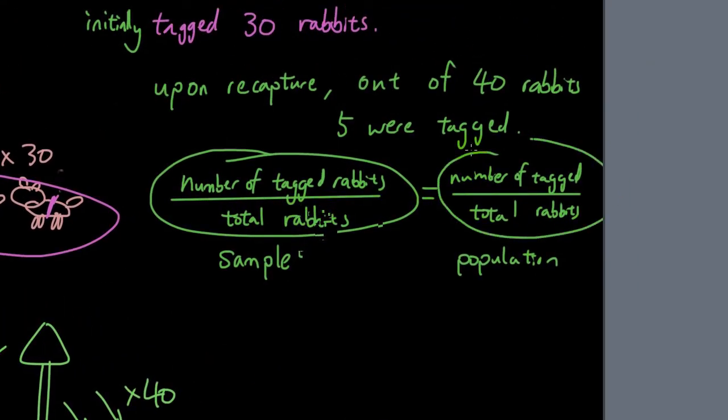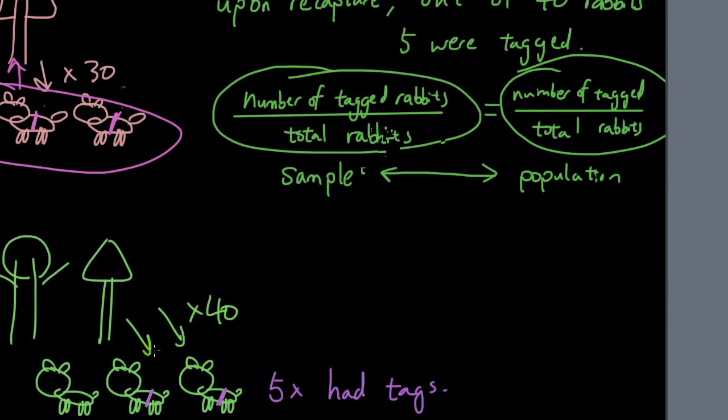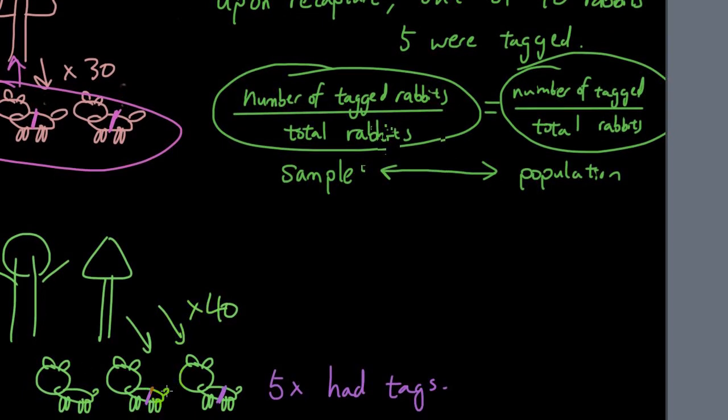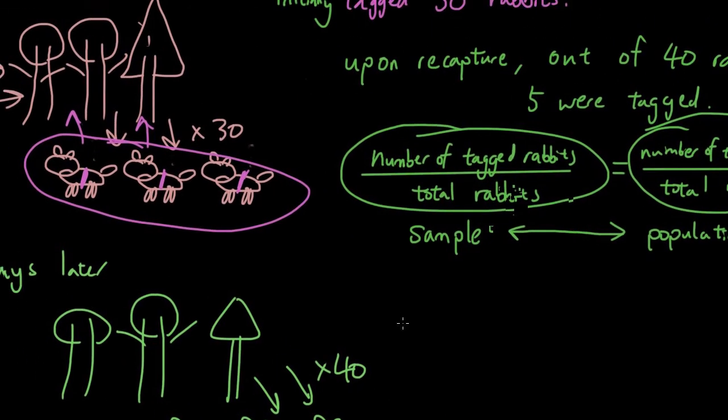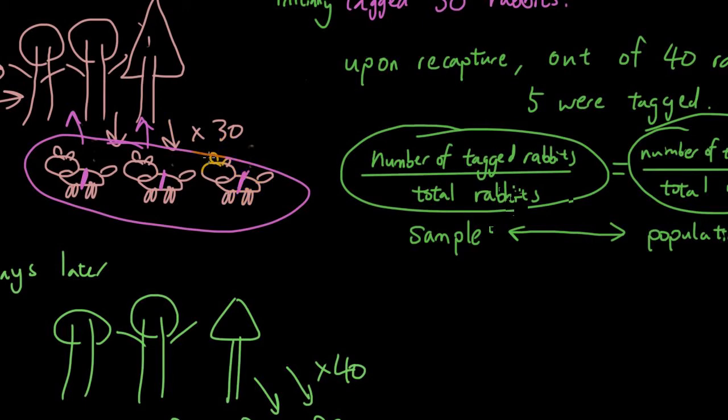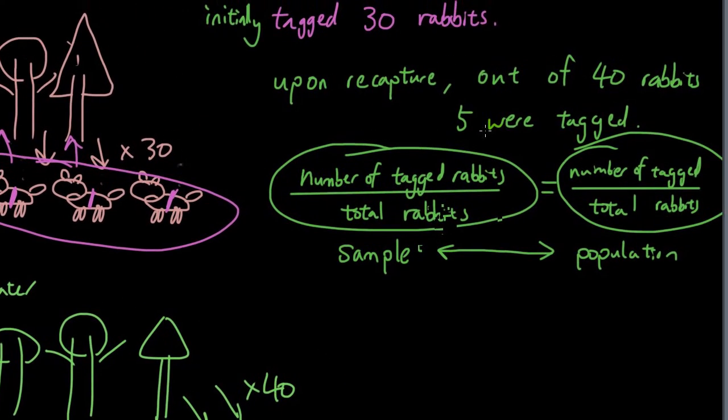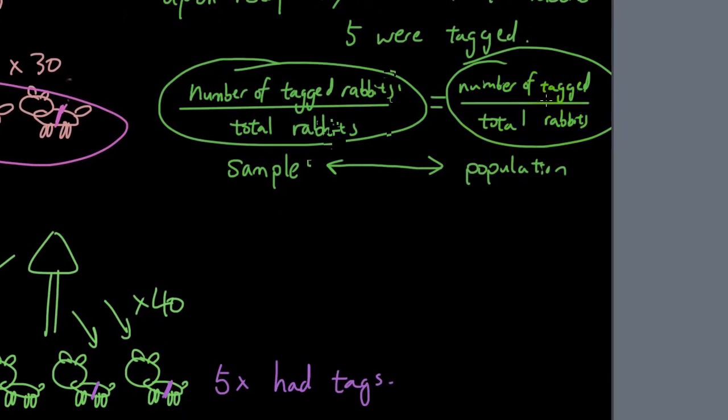And this fraction, the percentage of tagged rabbits, is going to equal the population. That is a very big assumption that they're making. So they're basically saying that the rabbits that you're catching, the 40 rabbits, they can represent the population because you caught them at random places. So if 5 out of 40 of your rabbits have tags, then we know that because initially we tagged 30 animals, we can use this equation to help us figure out what the total number of rabbits are in the whole population.